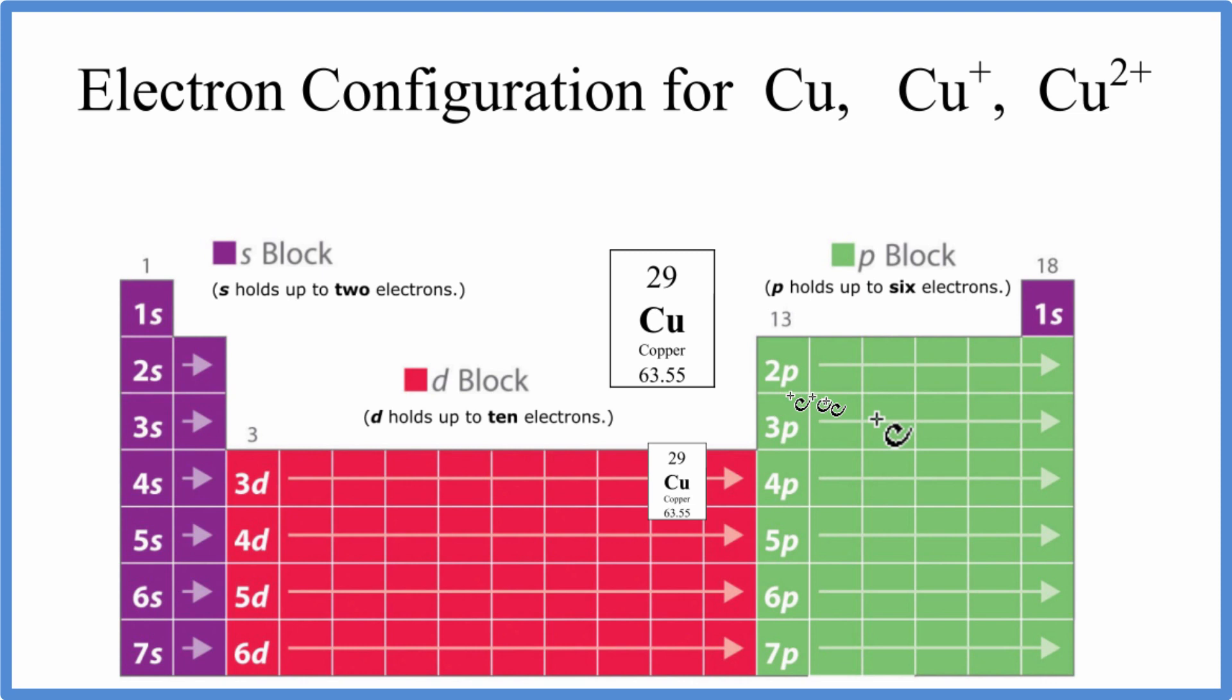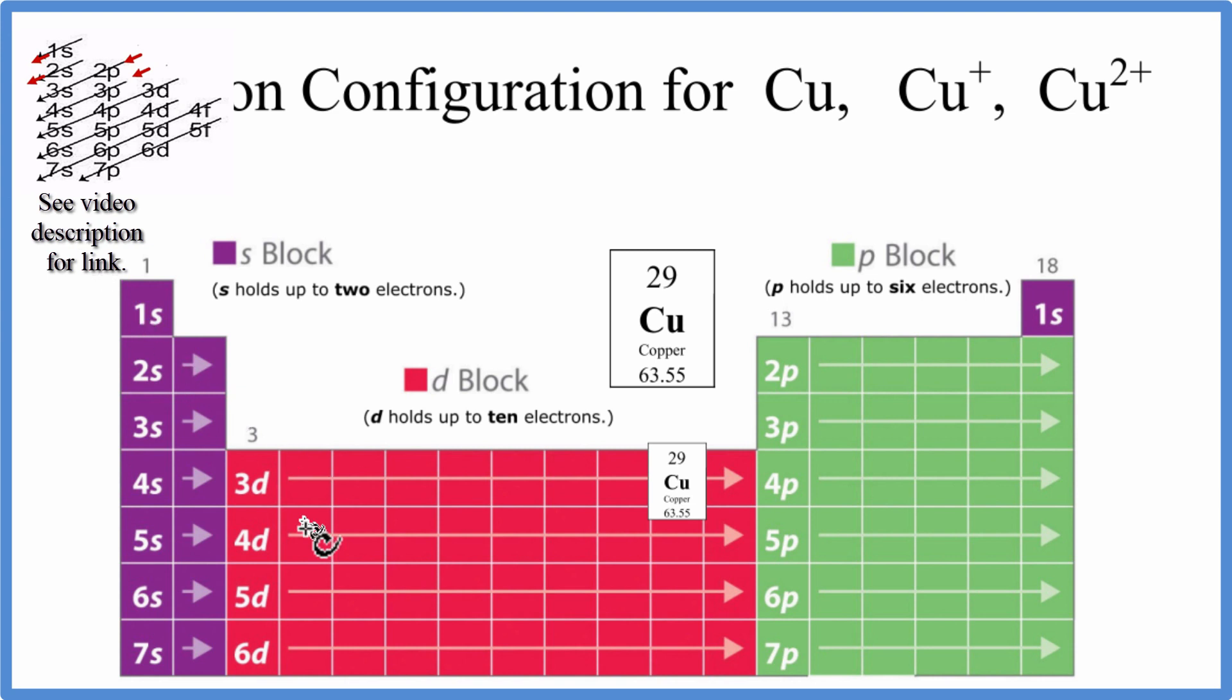So to write the electron configuration, I'm going to use this periodic table here. You can also use this chart. There's a link in the description how to do that. This is really a better way, though. It shows you the electron configuration, how it really relates to the periodic table.